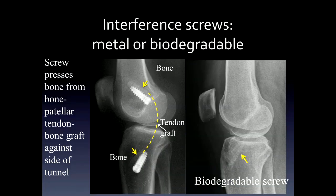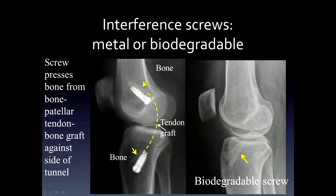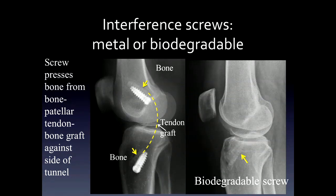Interference screws are used particularly for anterior cruciate ligament reconstructions of the bone-patellar tendon-bone type. The bone from the patella, patellar ligament, and tibial tubercle can be harvested and inserted in the tract of where the ACL should be. These bone areas are held inside tunnels by interference screws, which push the bone to the edge of the tunnel, securing it. Interference screws can be made of metal, as seen on the left, but they can also be biodegradable and barely visible, as seen on the right.